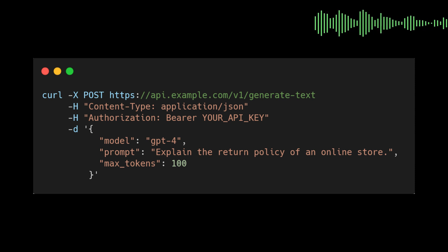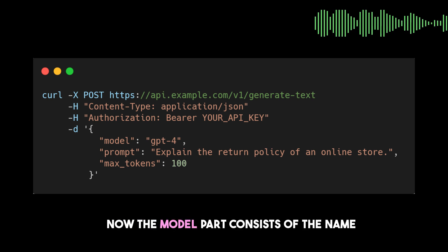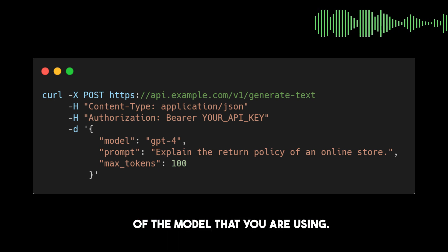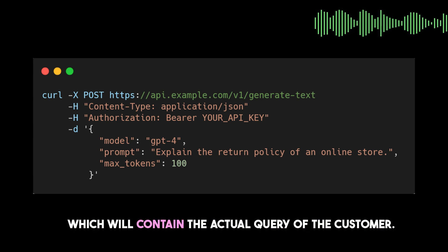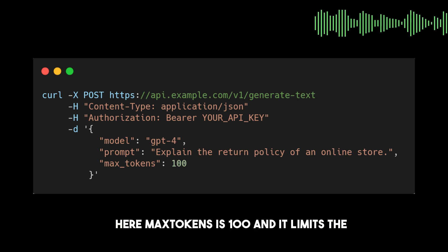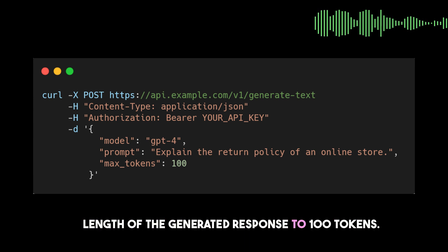The model part consists of the name of the model you are using — in this case it's GPT-4. Then there is the prompt, which contains the actual query of the customer. The max_tokens is set to 100, which limits the length of the generated response to 100 tokens.